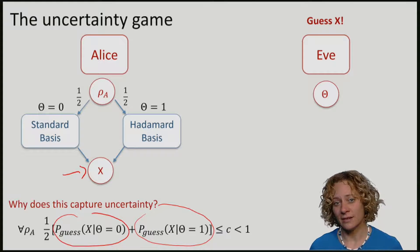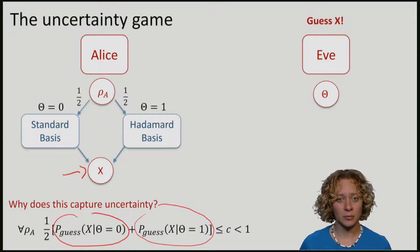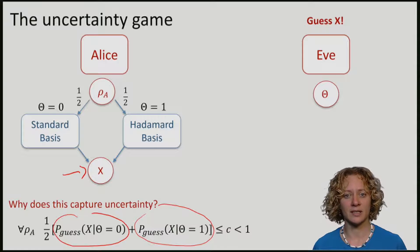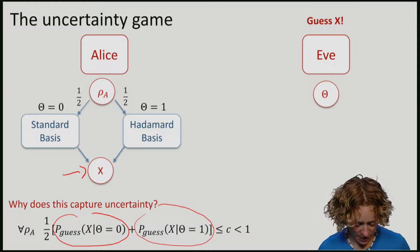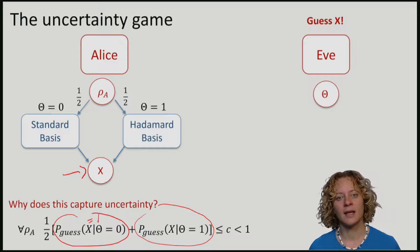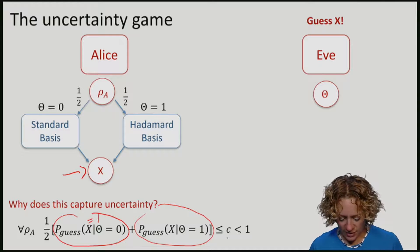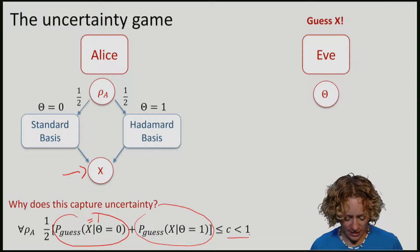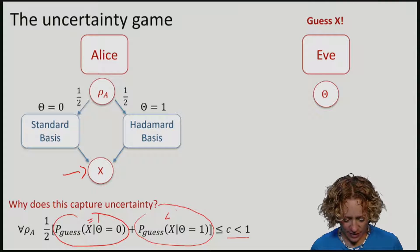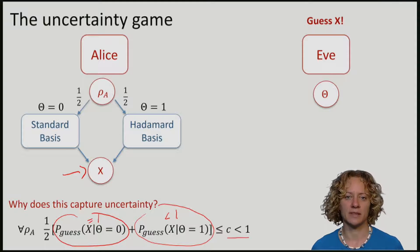If Eve's state is such that she can perfectly predict the outcome of the measurement in the standard basis, meaning that this here would be equal to one, then if this constant here is less than one, it means that she is necessarily uncertain about the outcome in the Hadamard basis.